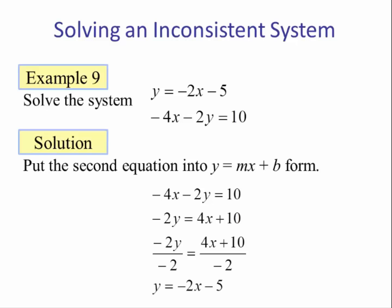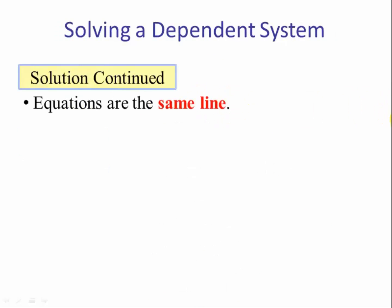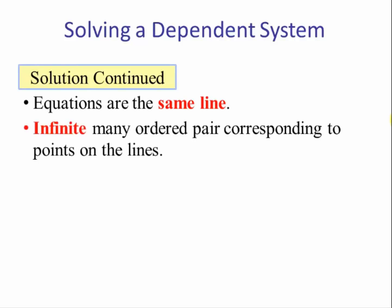So we have y equals negative 2x minus 5. And if we look closely, the second equation is exactly the same thing as the first equation. So it turns out these equations are the same line. Therefore there is an infinite number of ordered pairs for this system because they are the same line. Whatever point is on the first equation will be a point on the second equation.